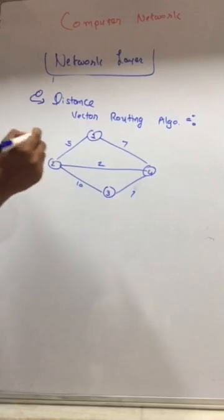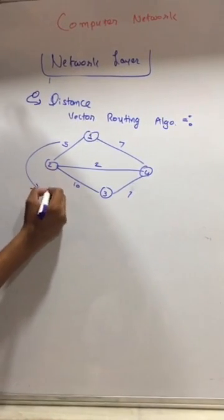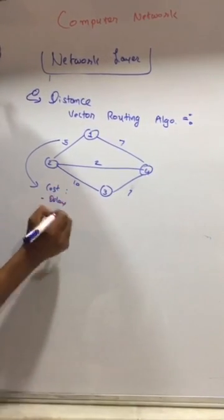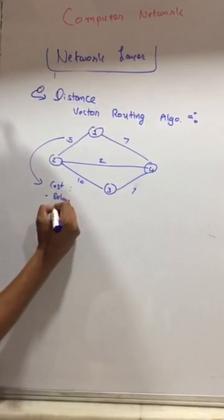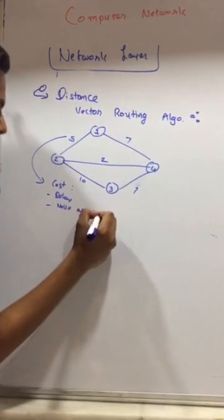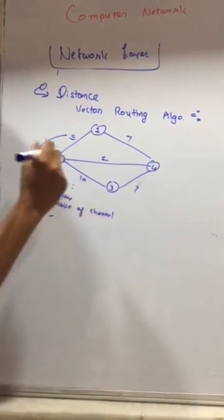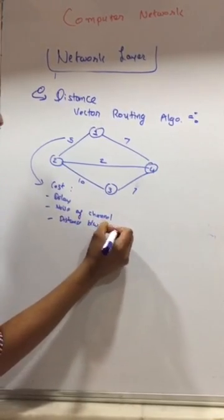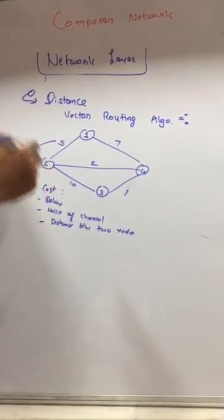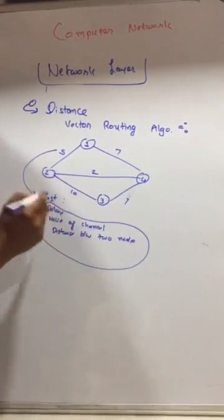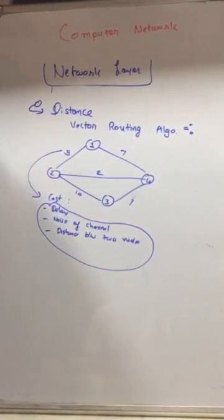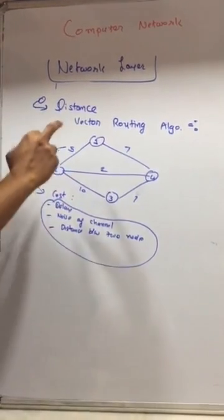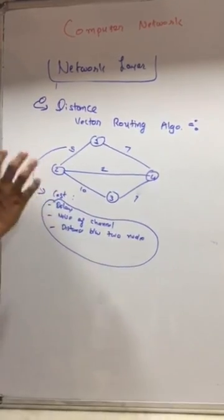The weight of a link represents the cost between nodes. This cost may represent delay, noise of the channel, or the distance between two nodes. This cost is composed of all these factors — there are many more factors that define delay. On the basis of this cost or delay, the routing algorithm will create the routing table.